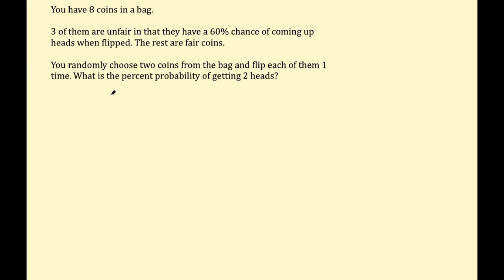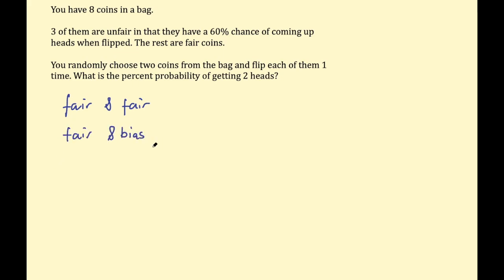I'm going to begin solving this with a tree diagram, but before that let's think about the possible outcomes of the coins you could pick out — this is without replacement. So we're picking the first coin out, then there'll be seven coins left in the bag, then we'll pick the second coin out. The possible outcomes are: a fair coin and then another fair coin, a fair coin and then a biased coin, or a biased coin and then another biased coin. I'm going to consider a fair-then-biased and biased-then-fair as the same outcome.